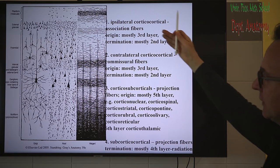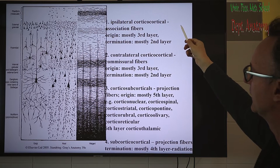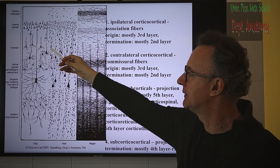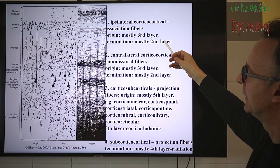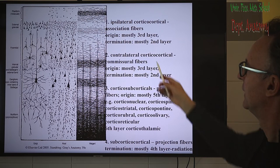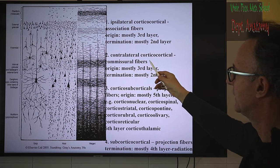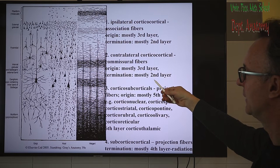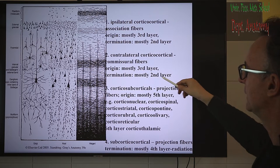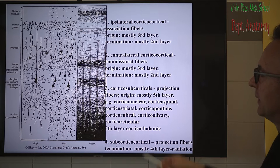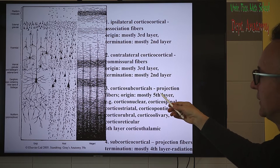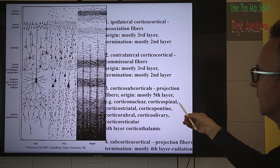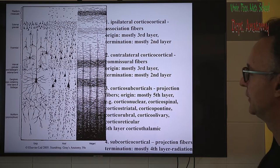The ipsilateral cortical-cortical pathways, or association fibers, originate mostly from the third layer with smaller pyramidal cells and shorter axons, terminating in the same hemisphere. The contralateral cortical-cortical fibers, the commissural fibers, also originate mostly from the third layer and terminate mostly in the second layer of the other hemisphere, usually in identical points in primates. The cortical-subcortical pathways, the descending projection pathways, originate mostly from the fifth layer with larger pyramidal cells. The most famous pathway is the pyramidal tract — the corticobulbar and corticospinal tract together.